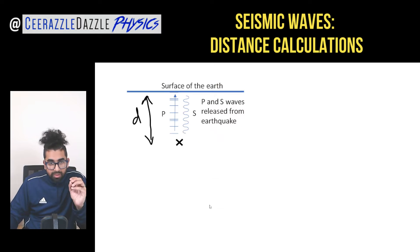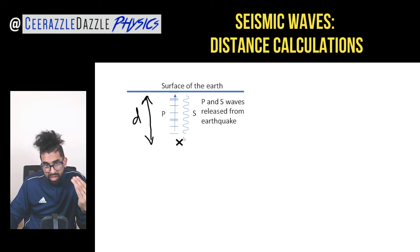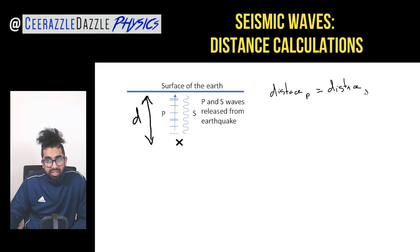The key thing to note is that the distance the P wave travels from X to the surface is the same as the distance the S wave travels from X to the surface. So we write: distance of the P wave equals distance of the S wave — that's the critical starting point.